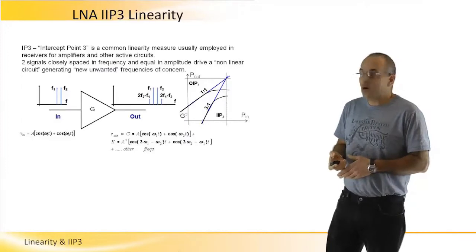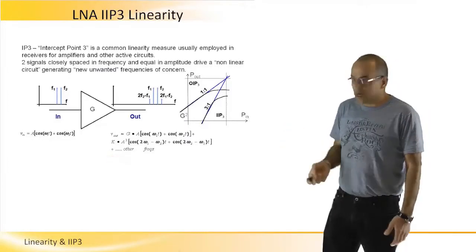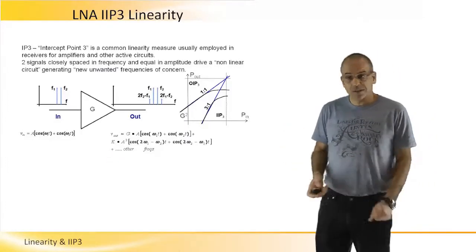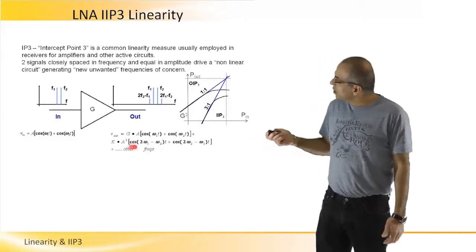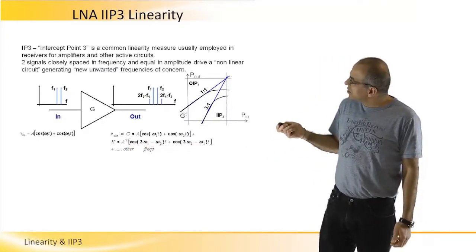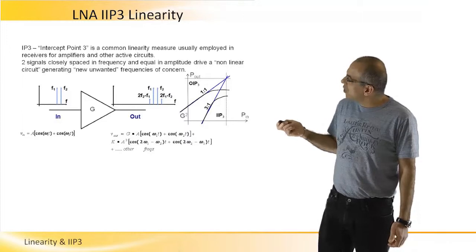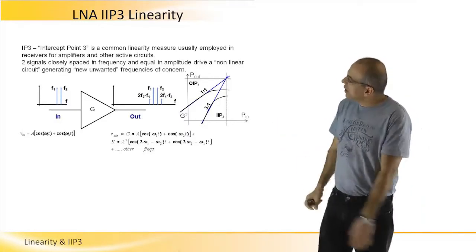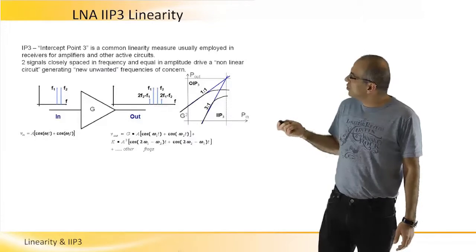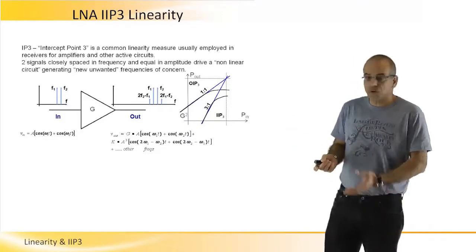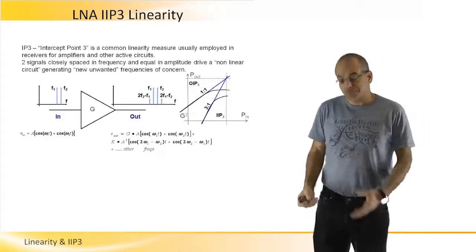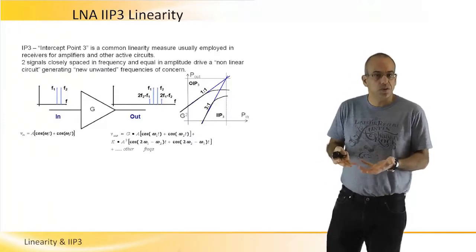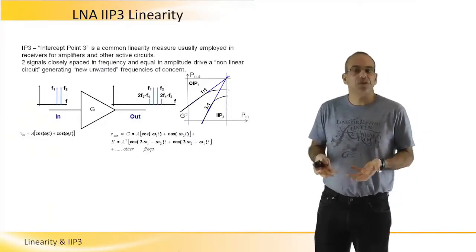amplified. However, we will find more harmonic products, and the two harmonic products of interest are 2f2 minus f1 and 2f1 minus f2, which are very close to the original products and therefore can be spurious signals that will degrade the receiver performance.